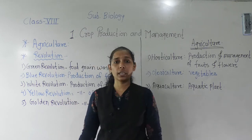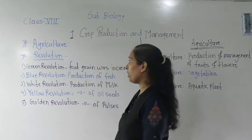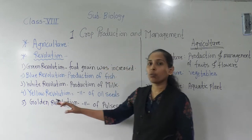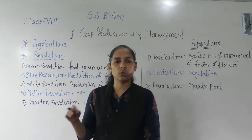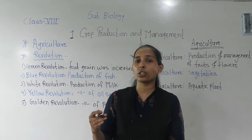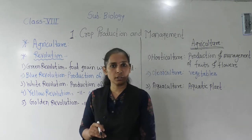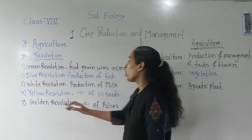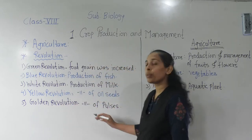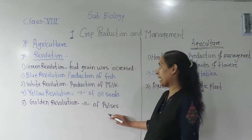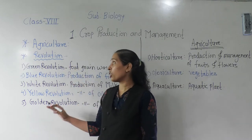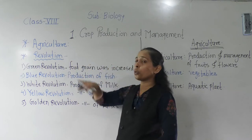The next and last revolution in the agriculture field we will discuss is called the Golden Revolution. What is related to the Golden Revolution — which food material's production increased? In the Golden Revolution, the production of pulses increased. So these are the certain revolutions we see in agriculture, all aimed at increasing production from the agriculture field.